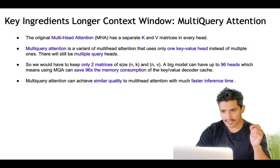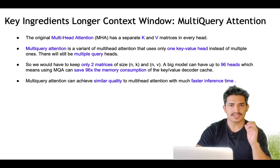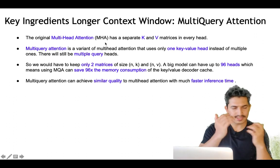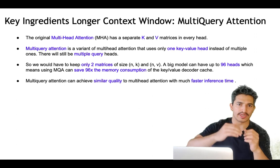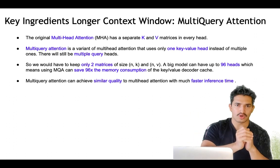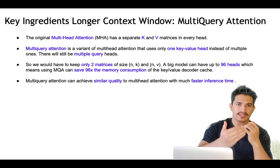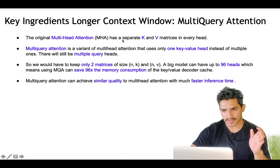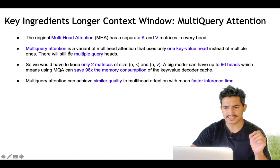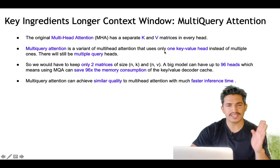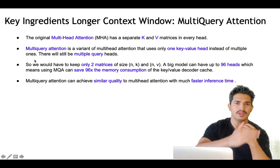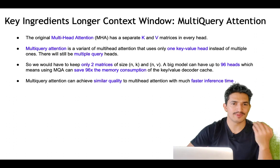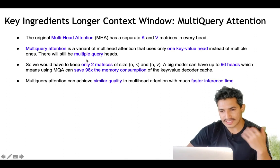Another key ingredient enabling longer context windows is multi-query attention. The original transformer architecture uses multi-head attention where each head has its own key, value, and query matrices. With multi-query attention, we use only one key-value head instead of multiple ones — so for all multiple heads, the query vector differs but the key and value vectors are shared. Because key and value matrices are the same across heads, we only need to keep two matrices of size N×k and N×v.